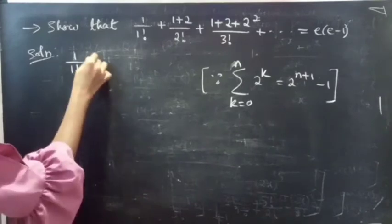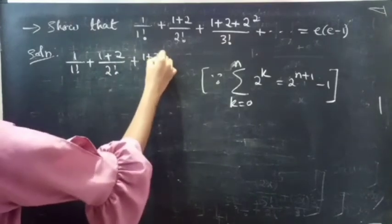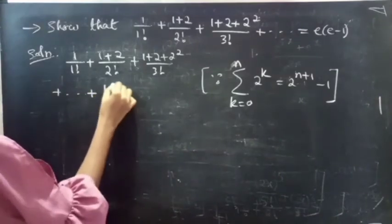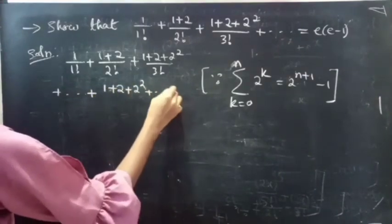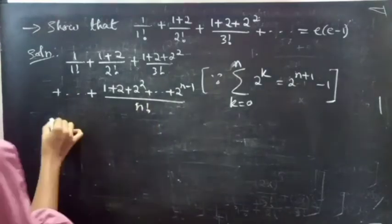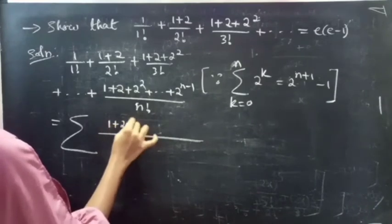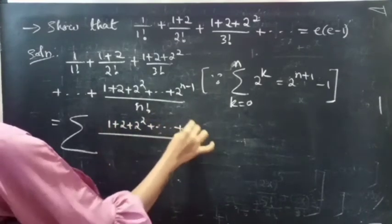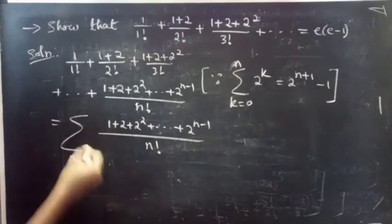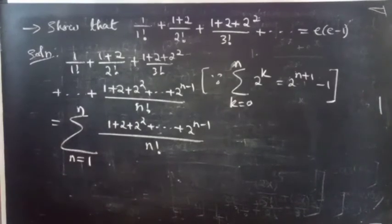Now we can write the full series — 1 by 1 factorial plus 1 plus 2 by 2 factorial plus 1 plus 2 plus 2 squared by 3 factorial, plus ... plus 1 plus 2 plus 2 squared plus ... plus 2 power n minus 1 by n factorial — as the summation from n equals to 1 to infinity of that nth term.